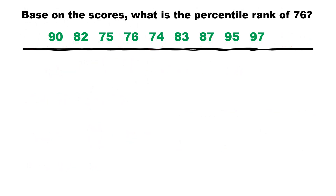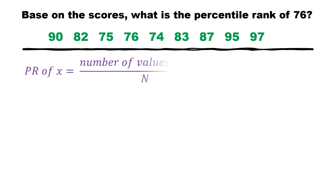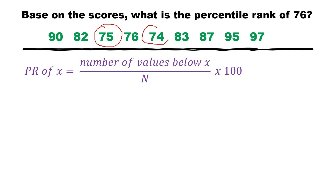Let's have another example. Based on the scores, what is the percentile rank of 76? To determine the percentile rank for ungrouped data, we count the number of values that are below or smaller than 76. We find only 2 scores that are lower than 76.